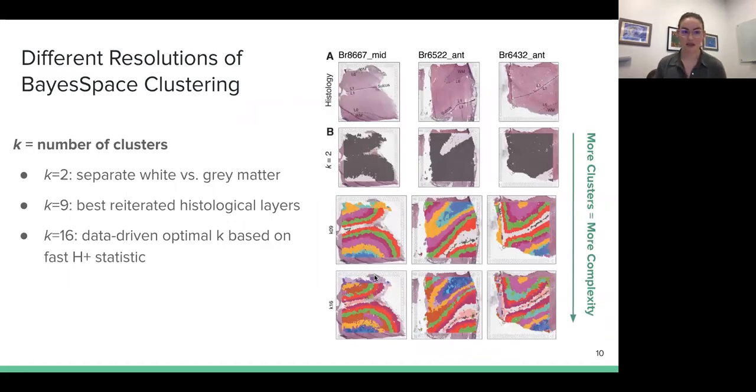In the Visium data using BayesSpace, we examined the clustering of the spots at many different resolutions, where K here is the number of clusters that we asked BayesSpace to produce. So first we took a look at K equals 2, and we found that that accurately separated white versus gray matter in the tissue. Next, we found that K equals 9 best iterated the histological layers in the tissue. And K of 16 was a data-driven optimal K based on the FAST-H plus statistic. So basically, we studied this tissue with increasing clusters and more complexity.